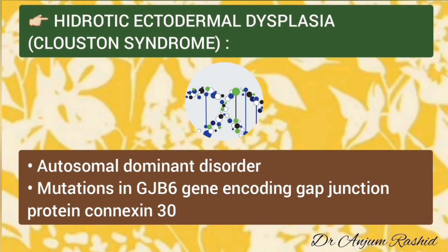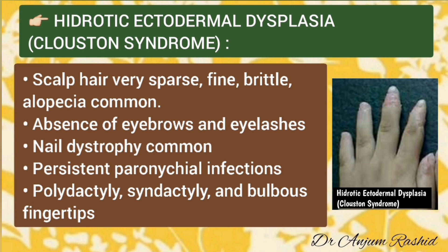The second most common type of ectodermal dysplasia is hydrotic ectodermal dysplasia, also known as Clouston syndrome. It has autosomal dominant inheritance and is caused by a mutation in the GJB6 gene, which normally codes for the gap junction protein Connexin 30. Scalp hair is very sparse, fine, and brittle. Alopecia is common, and there is absence of eyebrows and eyelashes. Nail dystrophy and persistent paronychia infections are common.